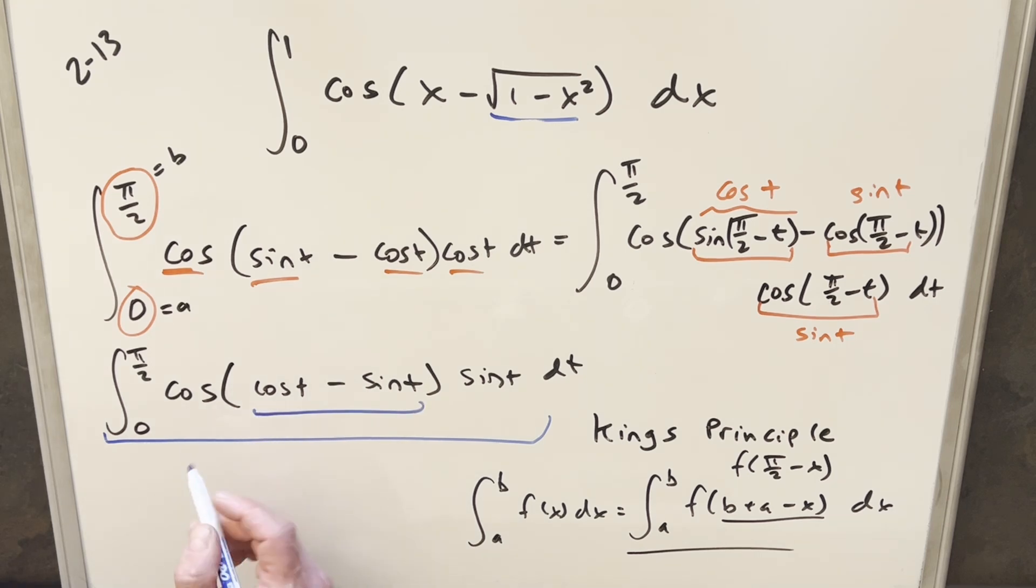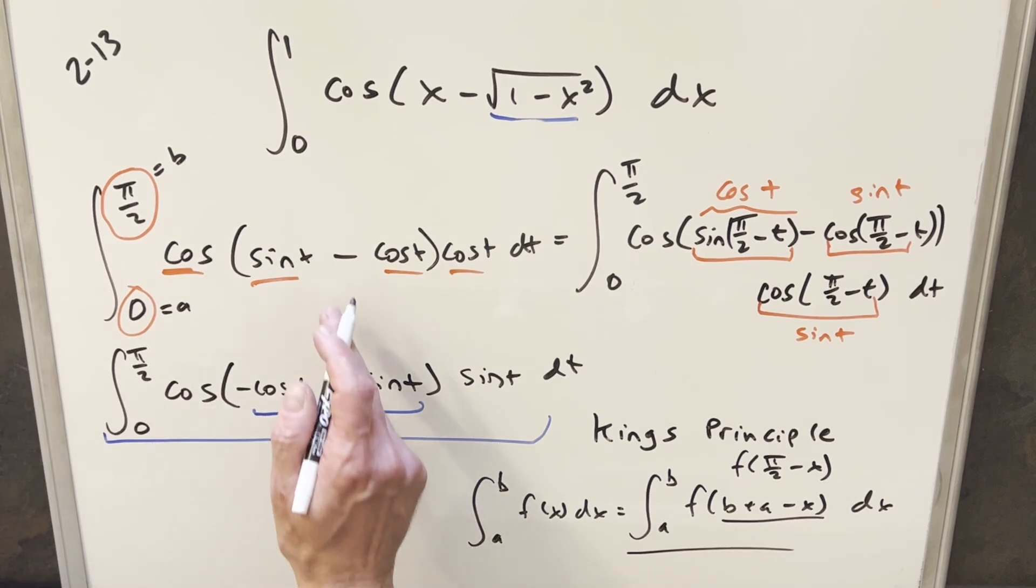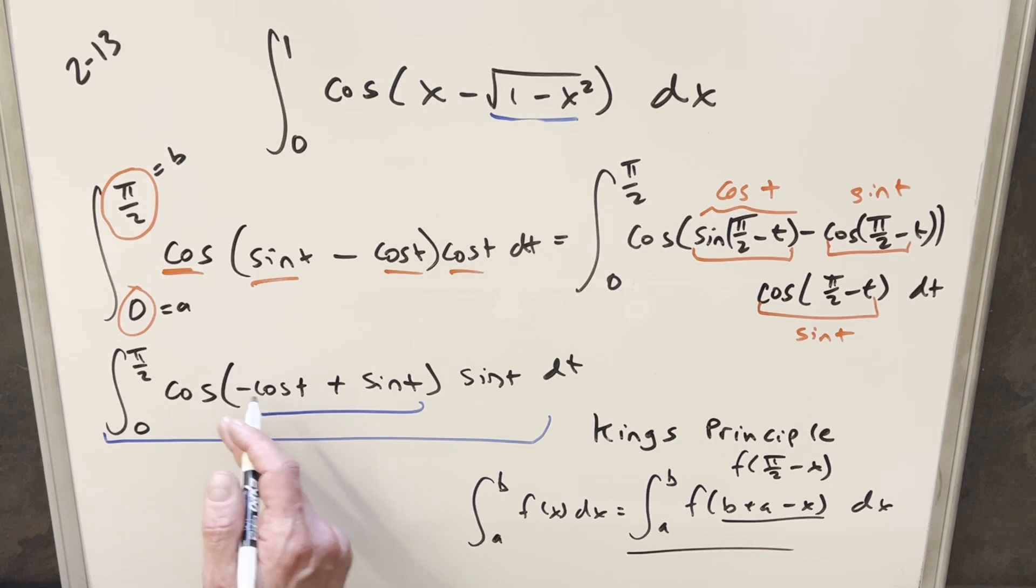Now because cosine is an even function, I can actually multiply a minus sign in it or take a minus sign out, and so when I multiply in a minus sign inside cosine, we can just reverse this, and now this is exactly the same as this right here, this is sine t minus cosine t in a different order.